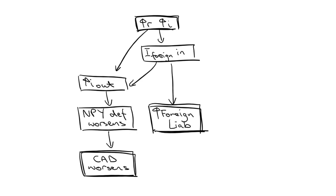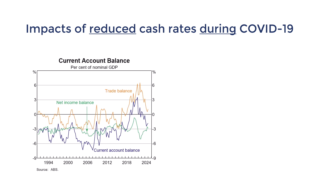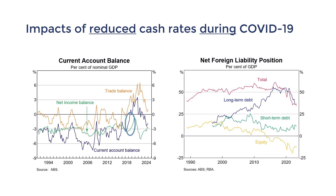So overall, tight monetary policy and higher cash rates will lead to worsened MPY and CAD, while lower cash rates will lead to improvements. You could see this during the loose monetary policy of the COVID-19 pandemic, when cash rates were lowered to 0.10% and the MPY account saw significant improvement. Net capital inflows and net foreign liabilities were also greatly reduced in this period. Then after the pandemic, to tackle inflation, the RBA used tight monetary policy, and the increased cash rates contributed to a large deficit.